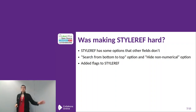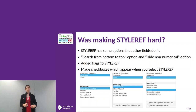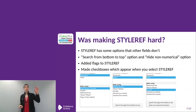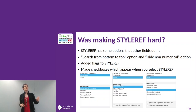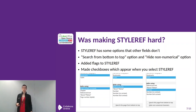To implement these, I added some flags to StarRef and I made these checkboxes appear when you select StarRef. So if you are selecting bookmarks in the references dialog, you only get the options to refer using a certain type. But if you select StarRef, you get the search box at the top. And if you select StarRef and a number reference type, then you'll also get this hide non-numerical characters option.